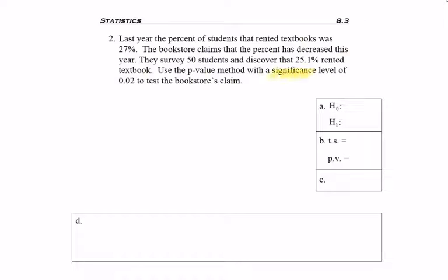Notice this problem just says significance level of 0.02. A lot of times we might just say alpha equals 0.02, but it's the same thing. I'm always looking for where is the claim, and we're fortunate because this time it actually says the bookstore claims.